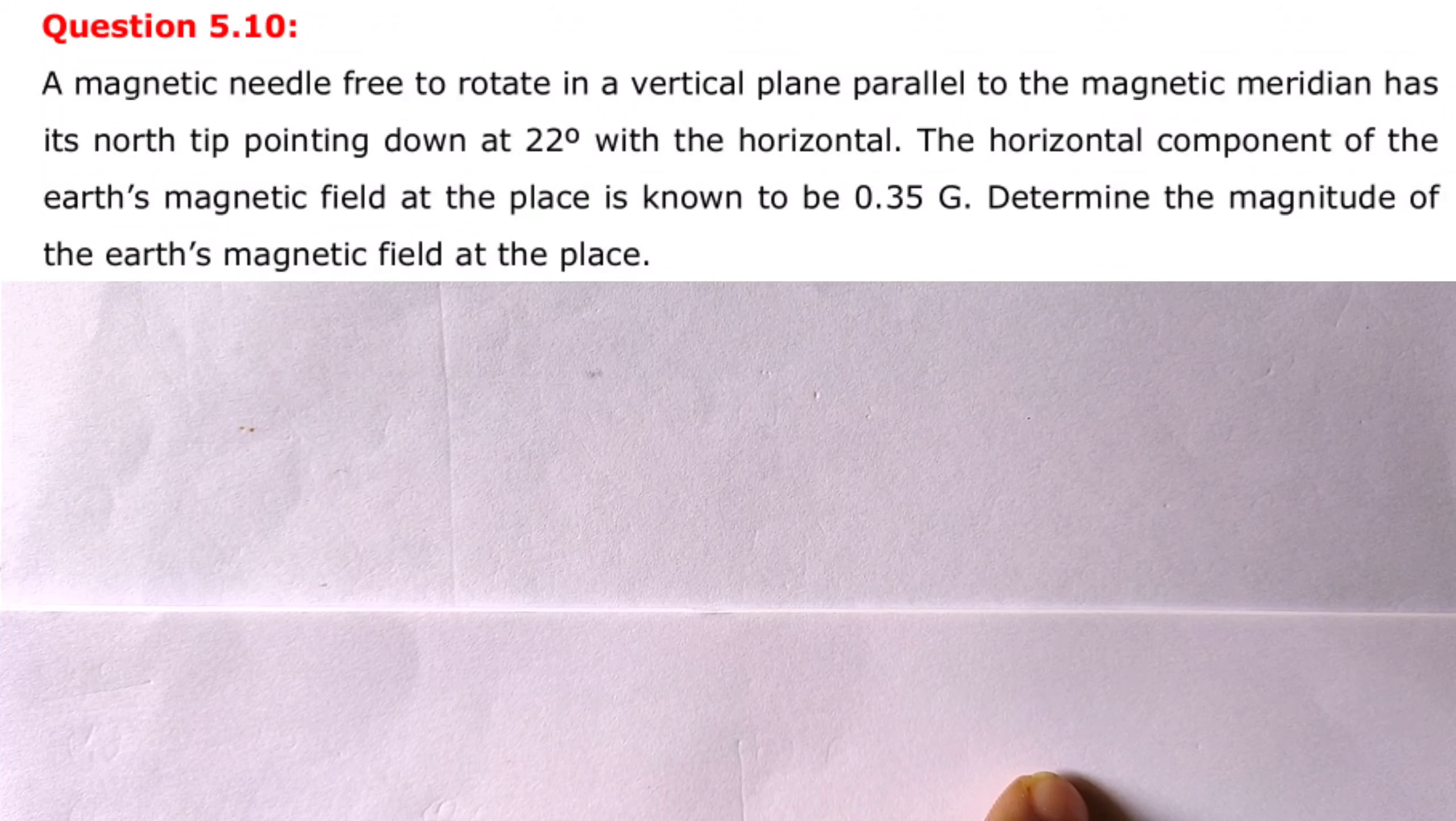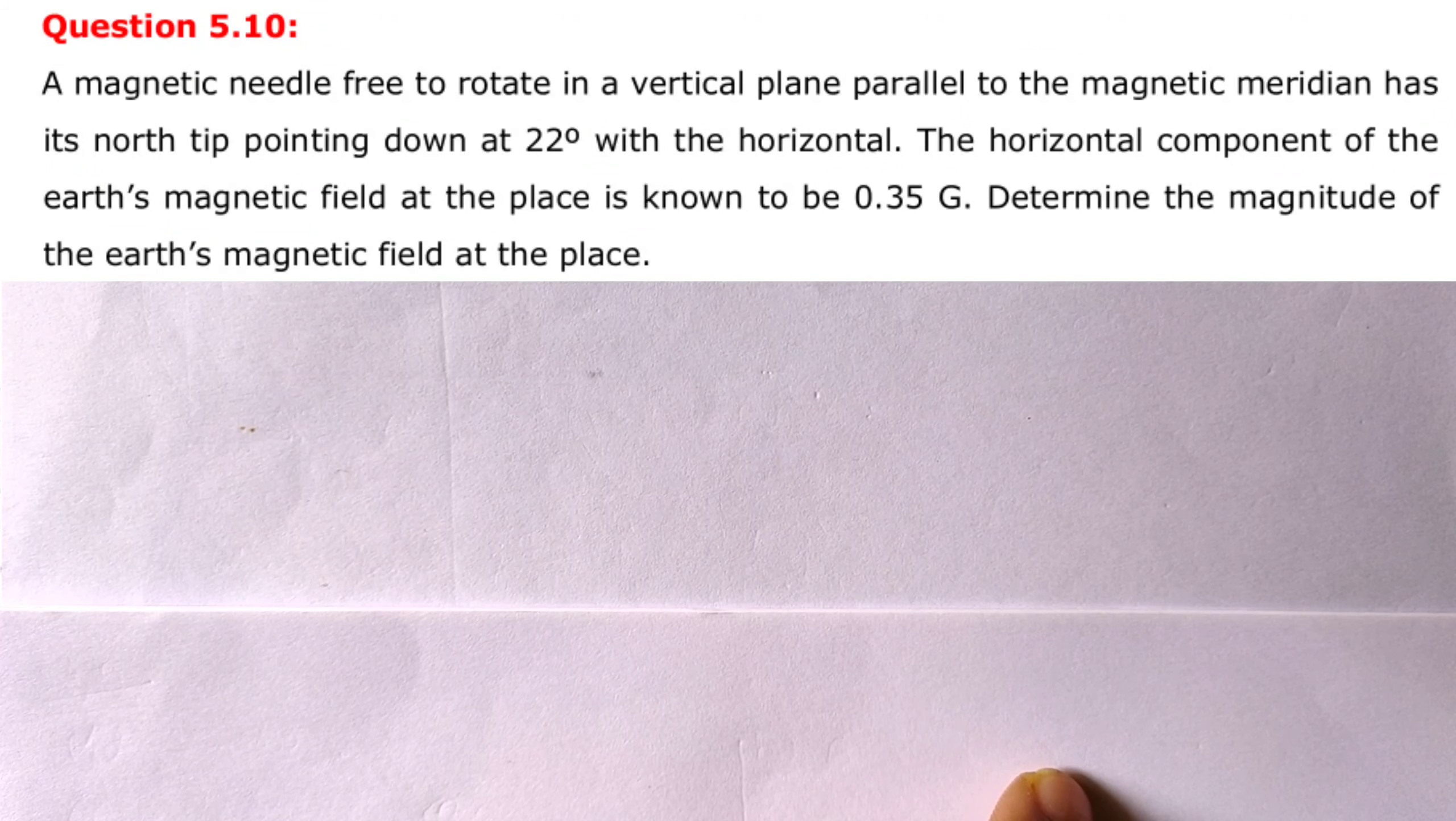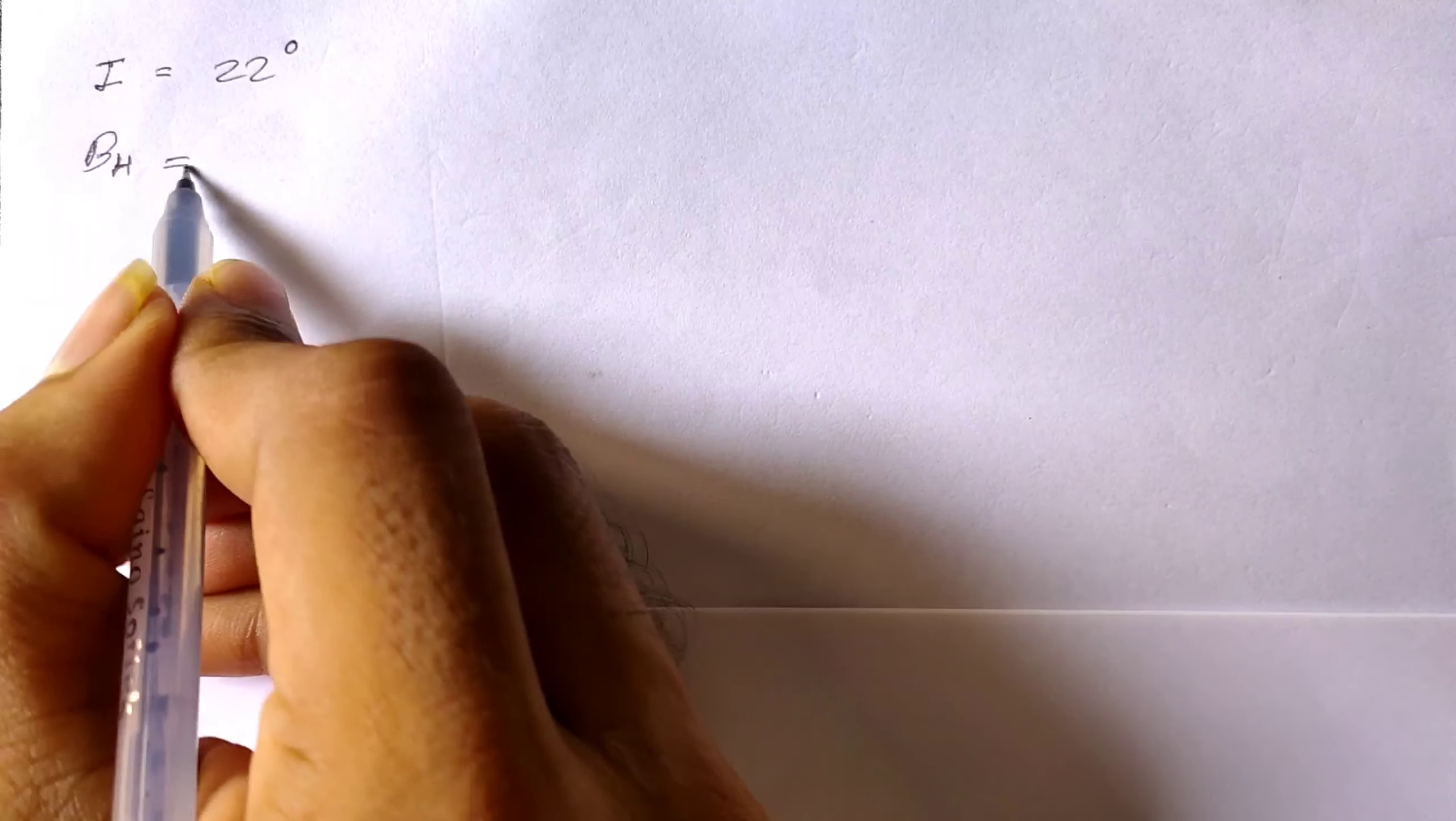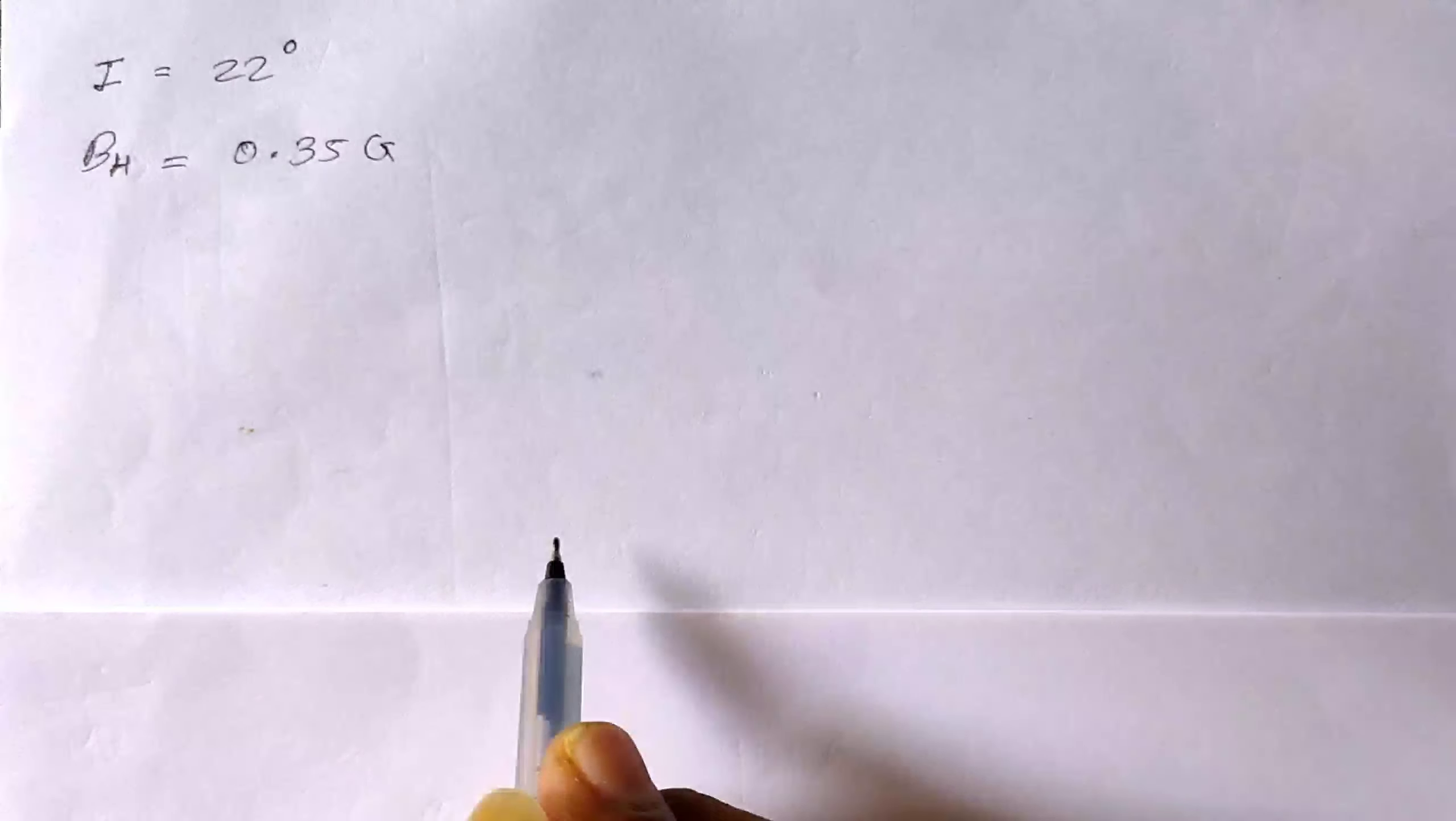We can say magnetic field makes an angle 22 degrees with the horizontal. So this angle is nothing but the magnetic inclination or dip angle, which is 22 degrees. In this problem, the horizontal component of earth's magnetic field BH is also given and it is 0.35 Gauss.